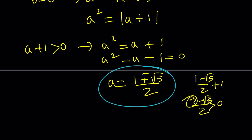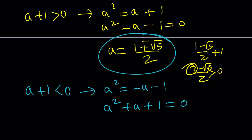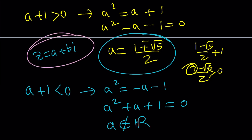If A plus 1 is less than zero, the absolute value introduces a negative sign, and putting everything on the same side gives a quadratic with no real solutions. Since A and B must always be real — that's the definition of Z equals A plus BI — this branch gives nothing. Therefore the only solutions from method one are (1+√5)/2 and (1−√5)/2.